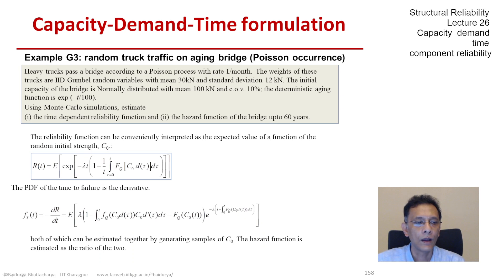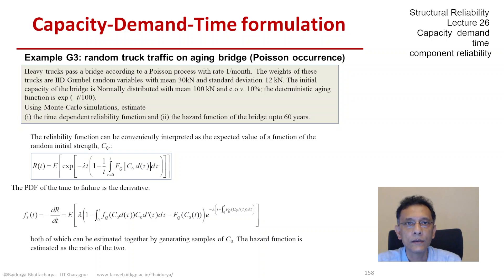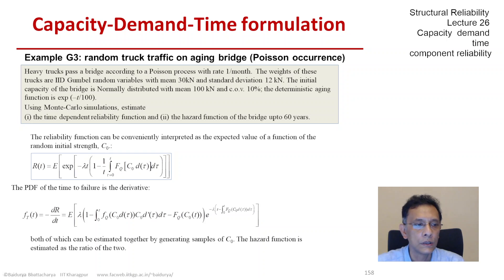We can estimate R and F by generating samples of C0, and if we do that enough number of times, we can estimate both R and H, the hazard function.